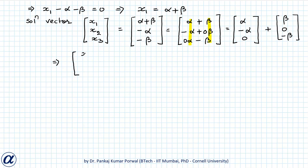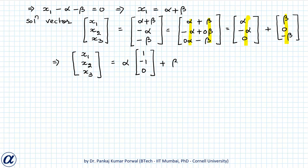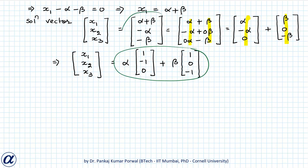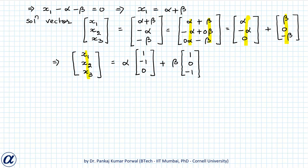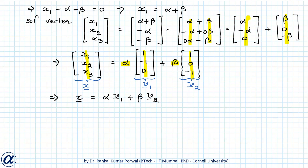From this form we can take α common to get α(1, −1, 0) and β common to get β(1, 0, −1). Calling these vectors v1 = (1, −1, 0) and v2 = (1, 0, −1), we have x = αv1 + βv2. Our solution vector x is written as a linear combination of v1 and v2, where α and β are arbitrary real numbers.